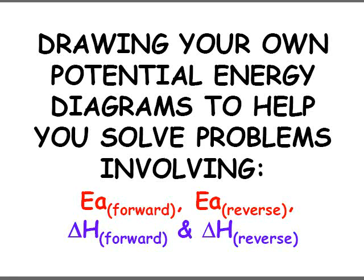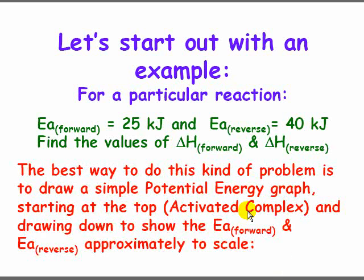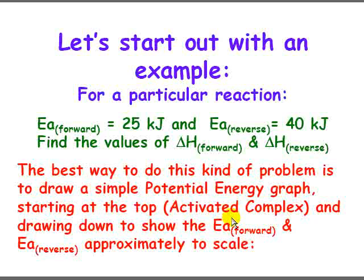Sometimes we're given problems where we have some values and must find others without being given a diagram. In these cases, we draw our own potential energy diagram to help solve the problems. Here's an example: Ea forward is positive 25 kilojoules and Ea reverse is 40 kilojoules, and we have to find delta H forward and delta H reverse. The best approach is to draw a simple potential energy graph, starting at the top — the activated complex — and drawing in the Ea forward and Ea reverse.